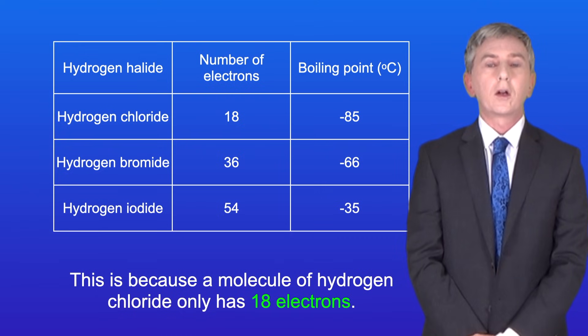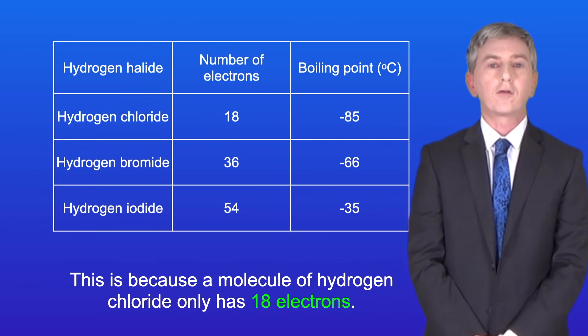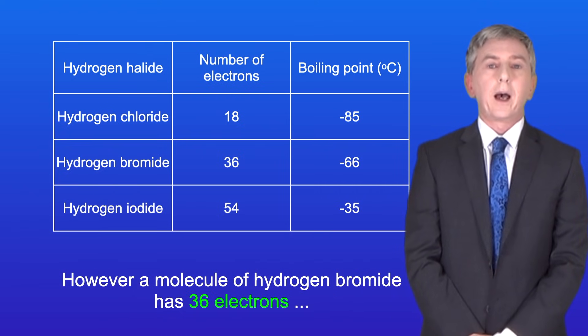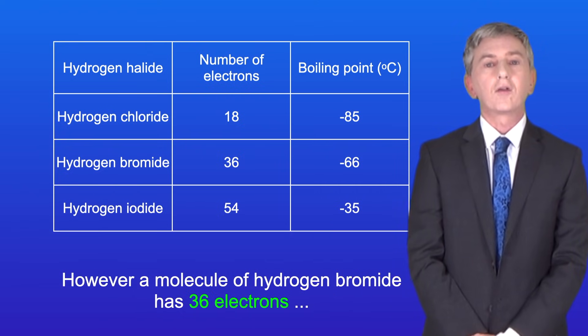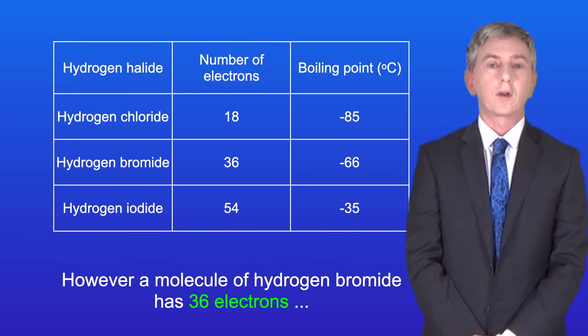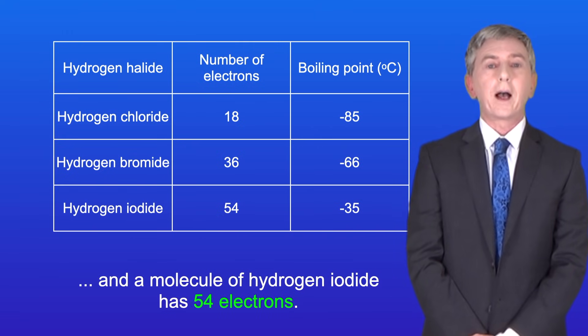This is because a molecule of hydrogen chloride only has 18 electrons. However, a molecule of hydrogen bromide has 36 electrons and a molecule of hydrogen iodide has got 54 electrons.